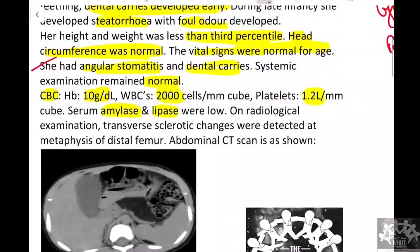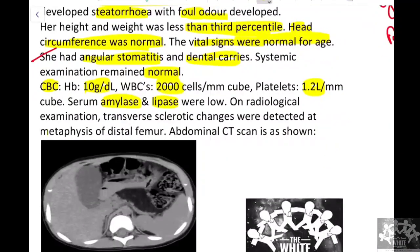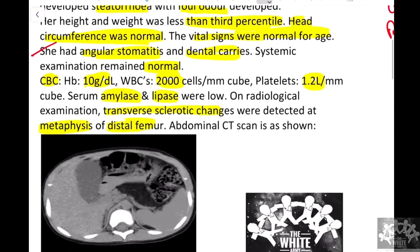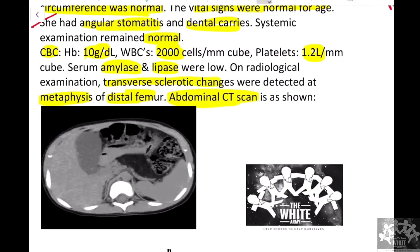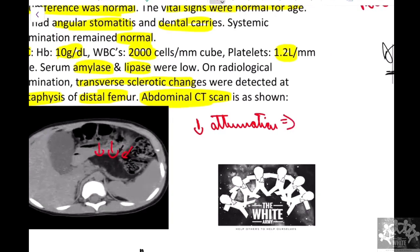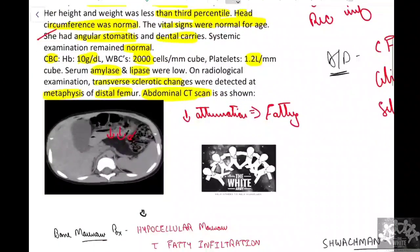On radiological examination, bone deformities were present — specifically metaphyseal dysplasia showing transverse sclerotic changes at the metaphysis of the distal femur. Abdominal CT scan revealed decreased attenuation of the pancreas compared to normal, likely due to fatty infiltration. Bone marrow examination showed hypocellular marrow with fatty infiltration.